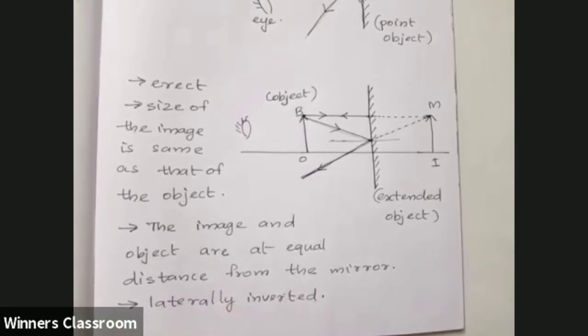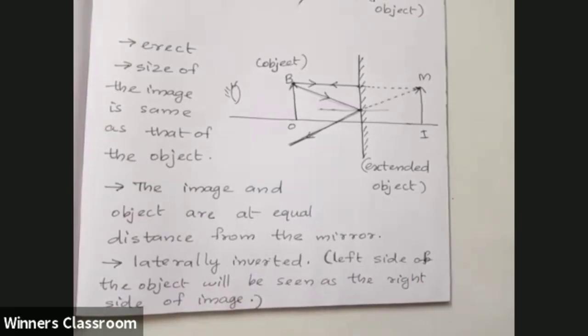And another important point regarding the image. The left side of the object will be the right side of the image. The image is virtual. So it cannot be caught in a screen. Then erect. Same size object and image. The same size of the image is equal distance. And laterally inverted.